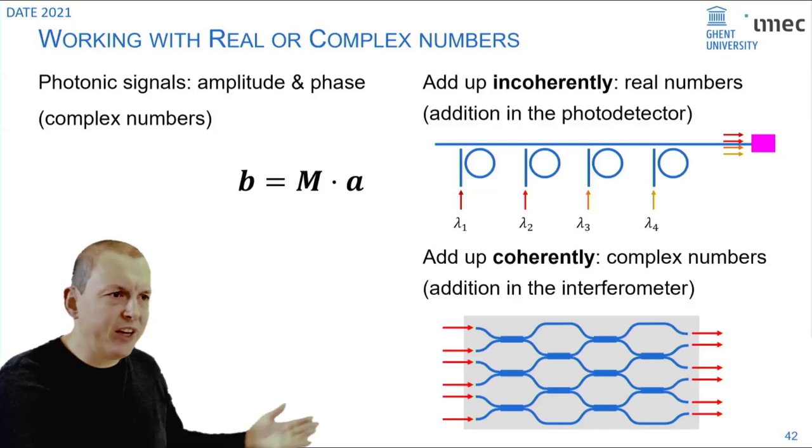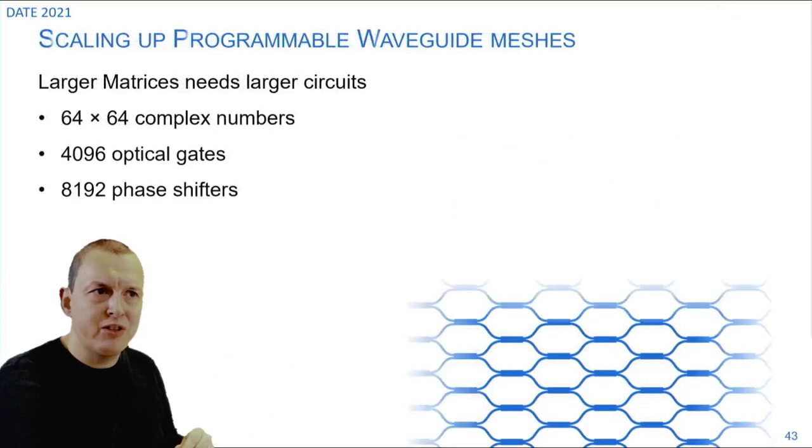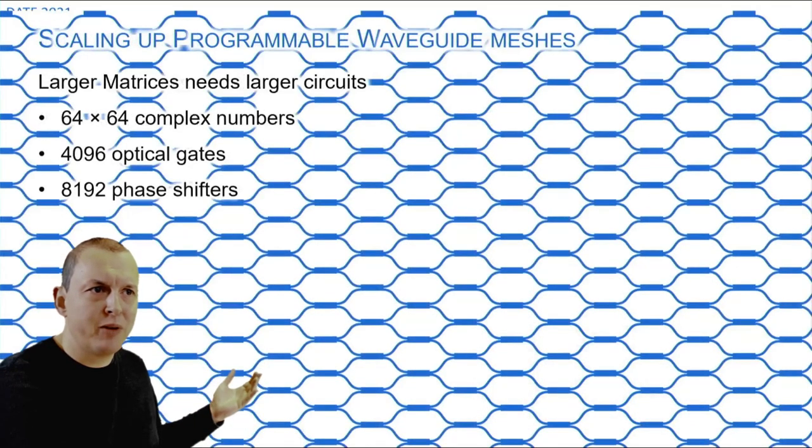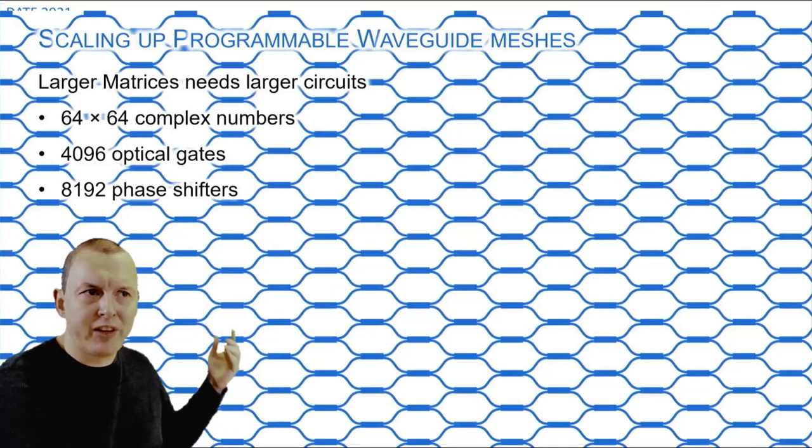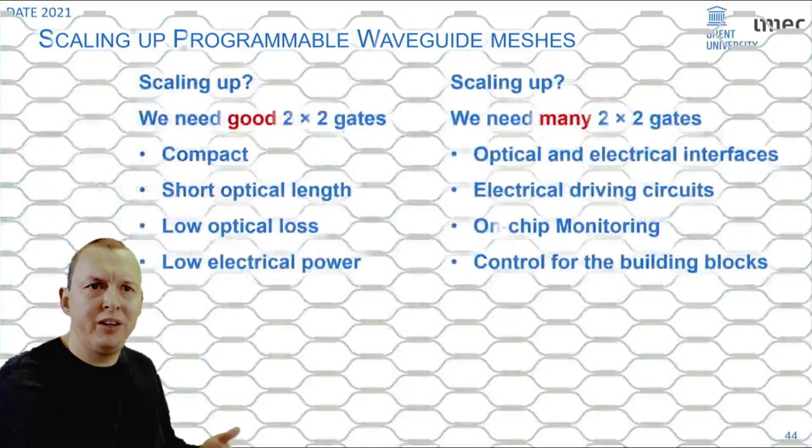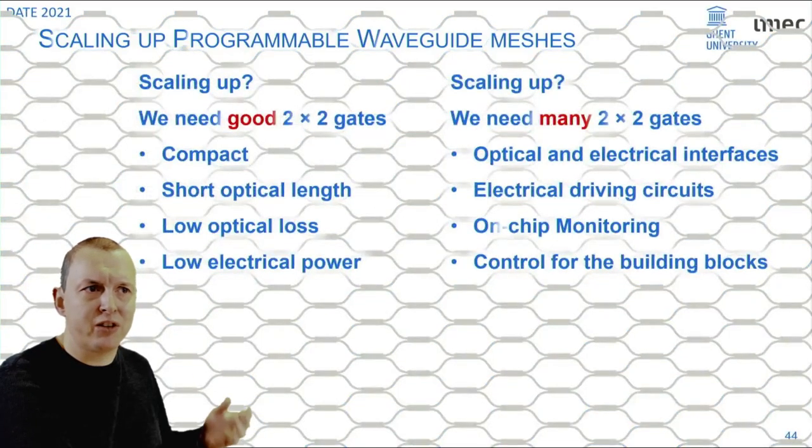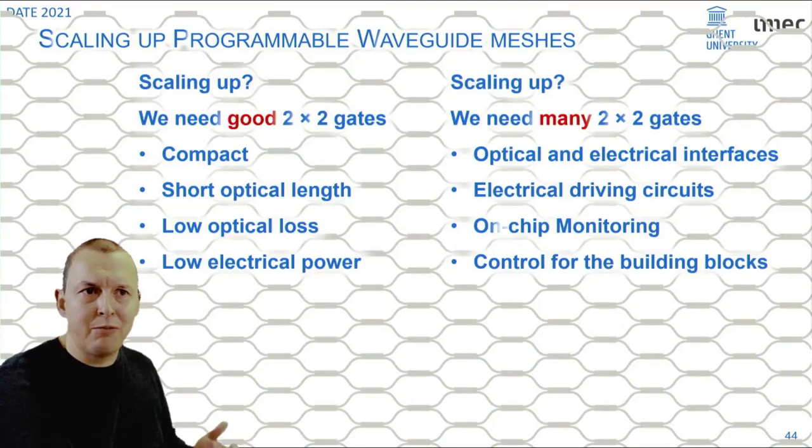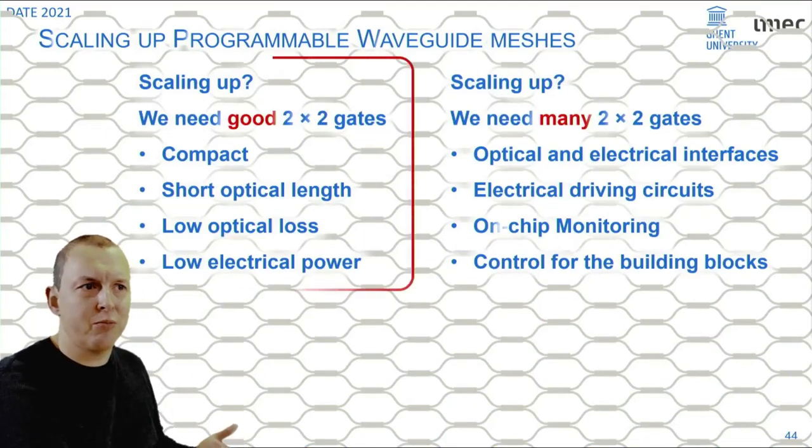If we want to scale up such circuits because we want to go to larger matrices, for instance a 64 by 64 matrix you already need 4000 gates and therefore 8000 phase shifters. To make that work you really need very good gates that are compact that have a short optical length, low optical losses and preferably consume low electrical power.